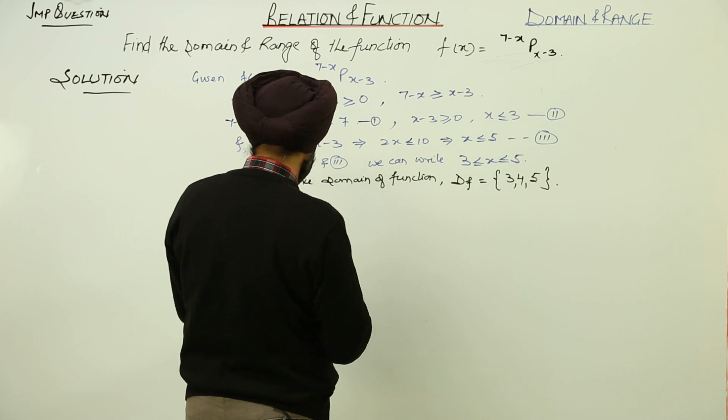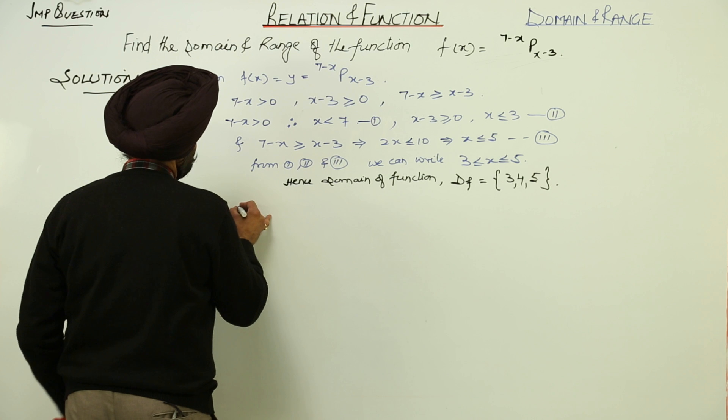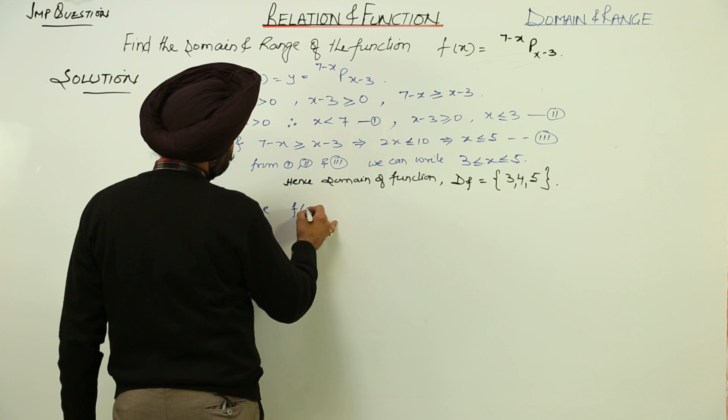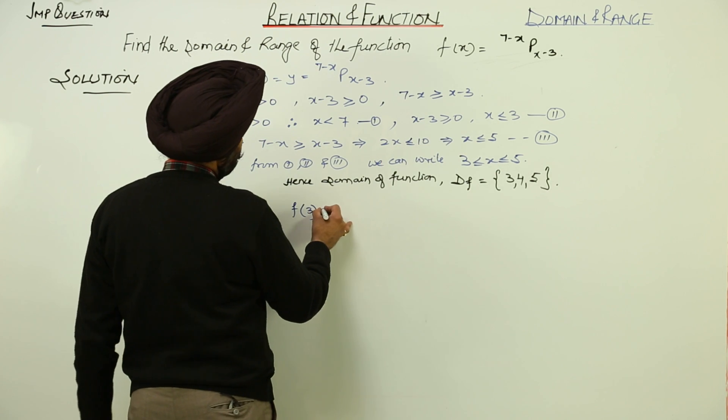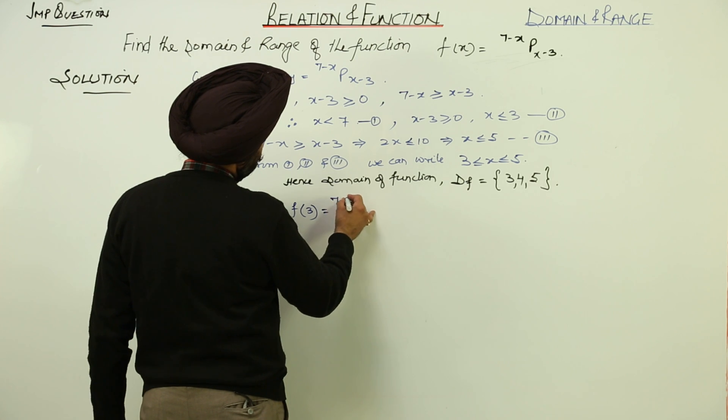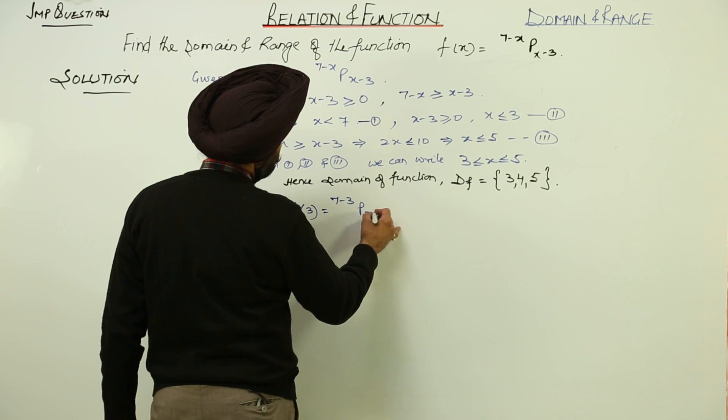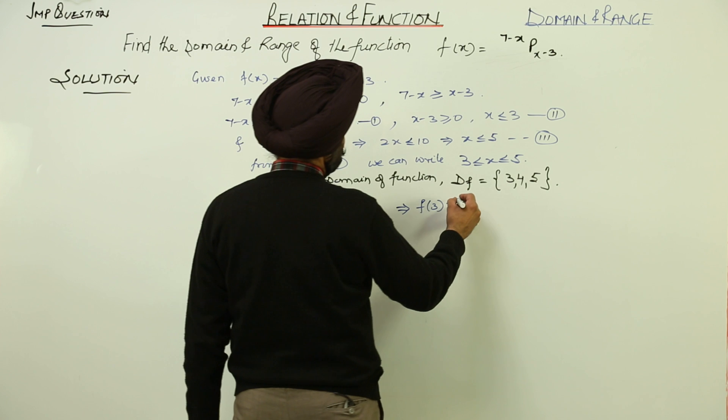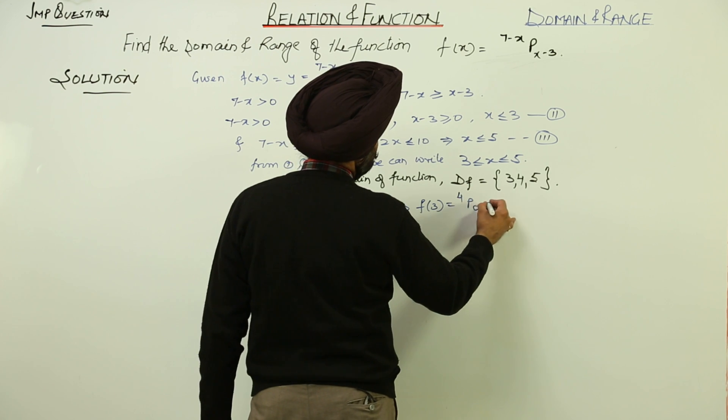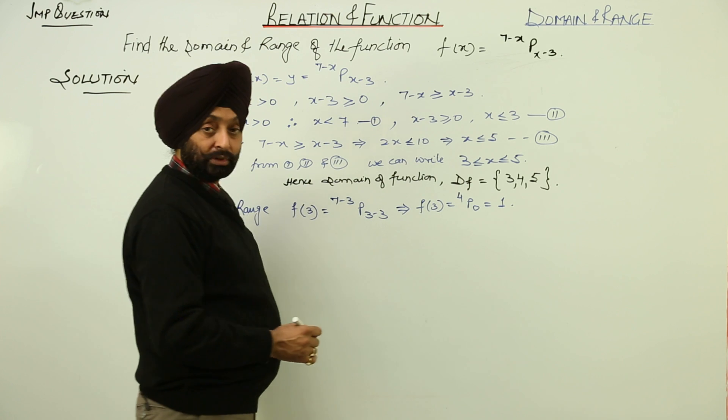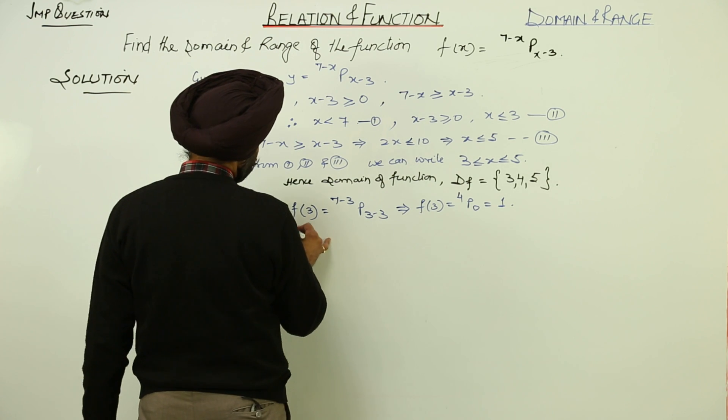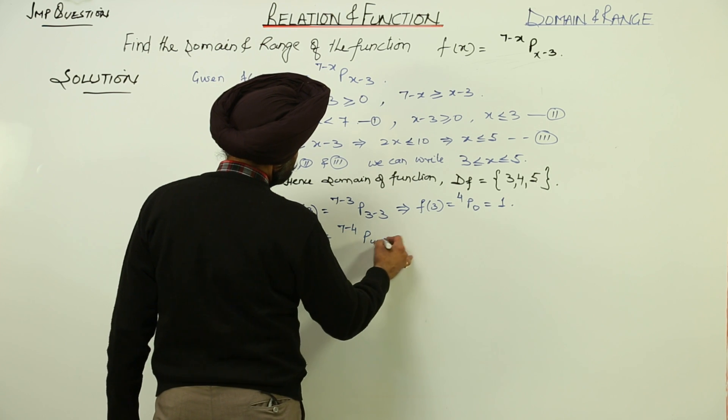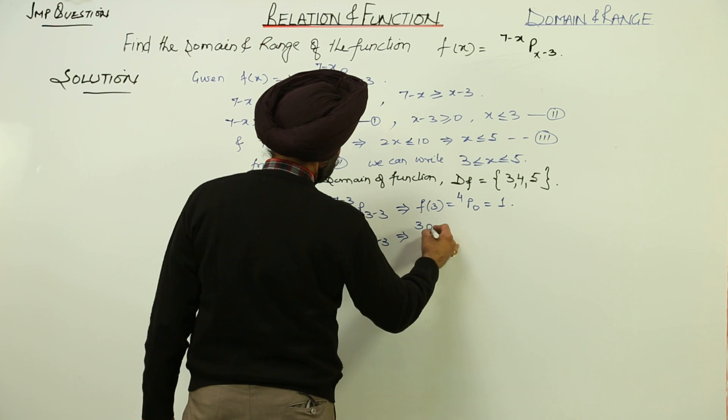Now, shifting for the range. Range for f(3), first of all we will be taking this 3. f(3) becomes 7 minus 3 permutation 3 minus 3. f(3) is equal to 4P0 and this is 1. Then for f(4), 7 minus 4 permutation 4 minus 3. This is 3P1.